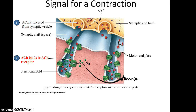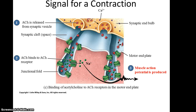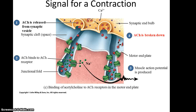The acetylcholine diffuses across the cleft and reaches the motor end plate, where it binds to acetylcholine receptors within the sarcolemma of the muscle cell. When this happens, sodium ions, which are positively charged, flow into the cell, changing the electrical composition on each side of the sarcolemma, thereby starting the muscle action potential. That muscle action potential flows along the sarcolemma, eventually reaching the T-tubules and triggering a contraction. Eventually the nerve impulse stops, acetylcholine stops being released, and an enzyme comes in to break up the acetylcholine present, so that the signal stops being sent.